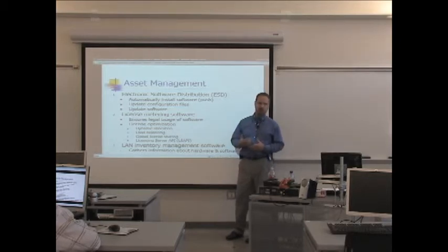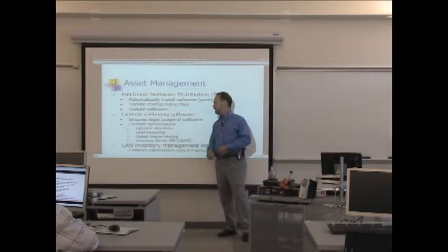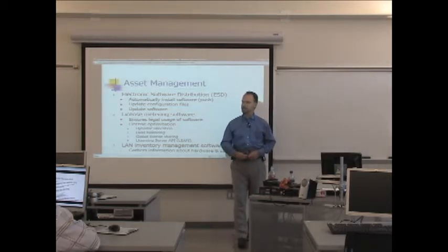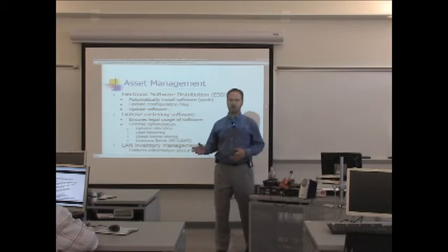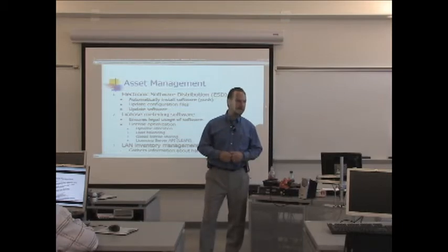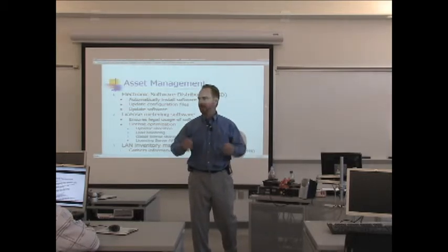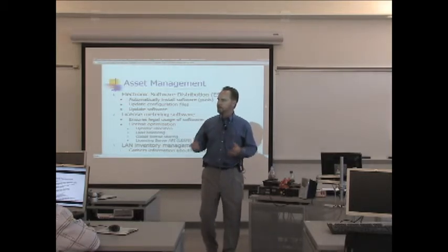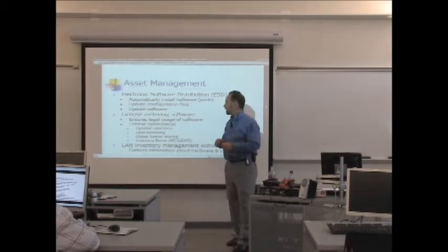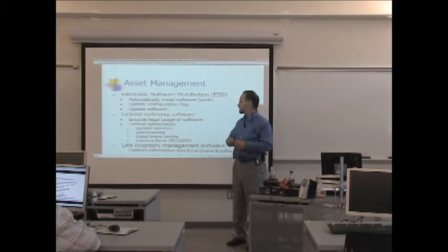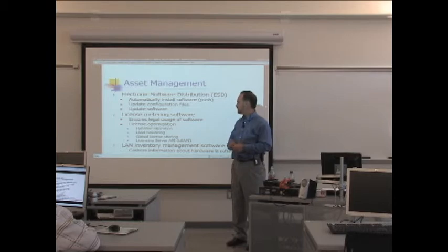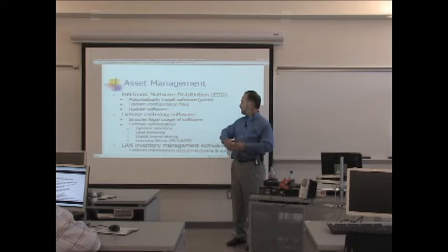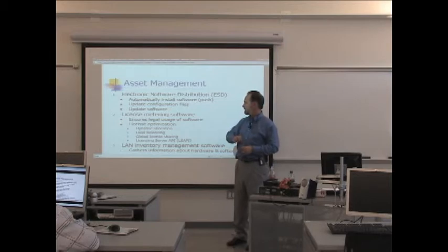more efficient with the usage of these licenses. We can have dynamic allocation of the licenses. Say we have a hundred licenses but a thousand employees—well, all one thousand employees aren't using that application simultaneously. So by dynamically allocating licenses, we can make sure that within the range of a hundred, each user that needs access can have it up to that limit. Load balancing, global license sharing—if we're in a very large enterprise-wide network, we can have licenses at the right location at the right time for the necessary use of the software.